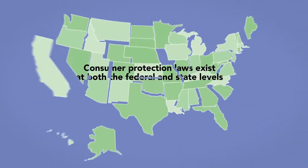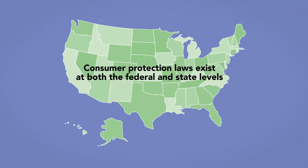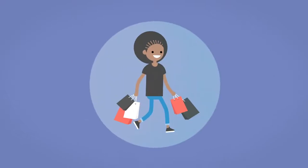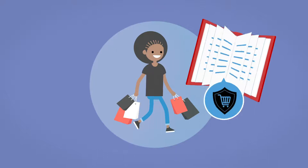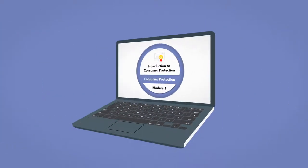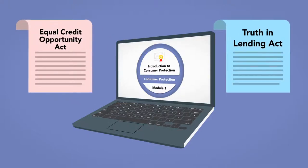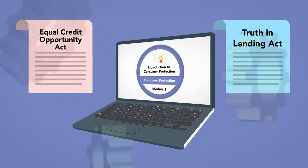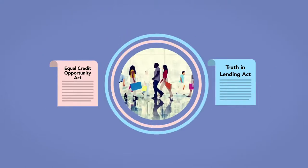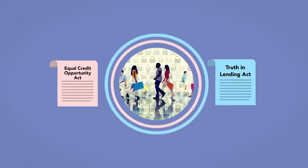Consumer protection laws exist at both the federal and state levels. These laws seek to achieve President Kennedy's mission by protecting consumers and educating consumers on how to protect themselves. In our introductory module, we'll examine two critical federal laws in this field: the Truth in Lending Act and the Equal Credit Opportunity Act, and how they protect the American consumer from predatory practices.